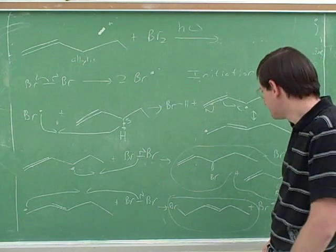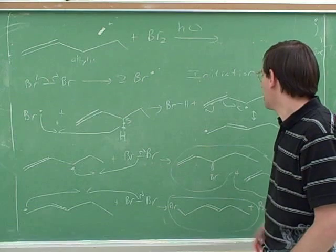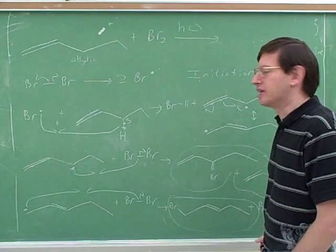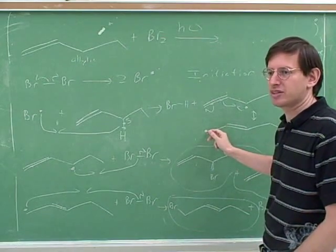So now, here's something else you have to watch out for. When you draw the radical intermediate, you have to ask if there's any other possible resonance structures. And if there are, you have to use those to get the other possible products.